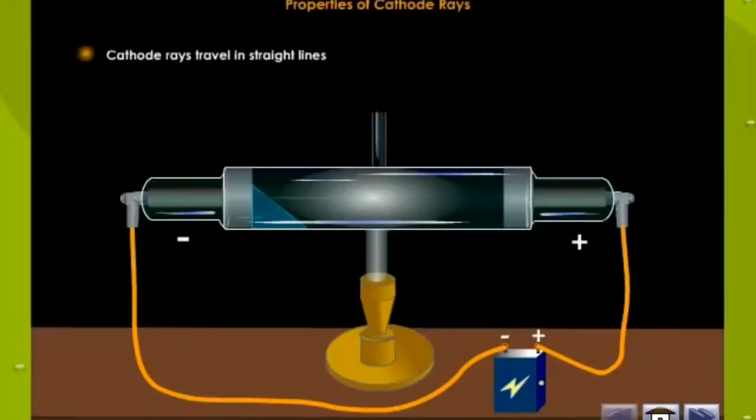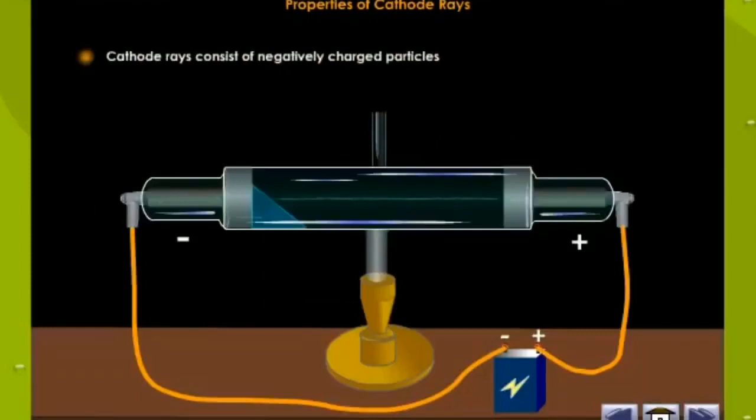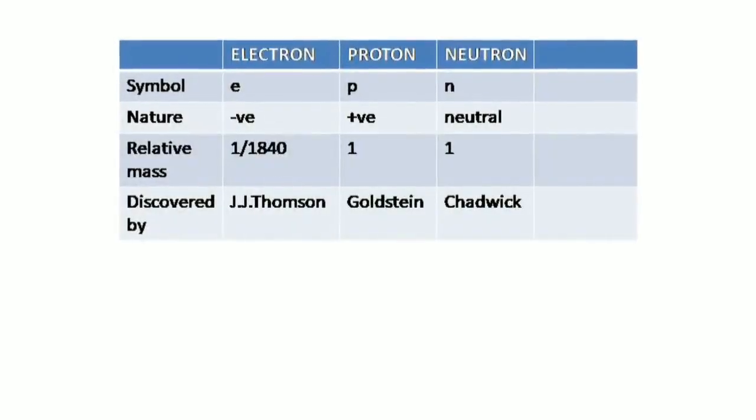J.J. Thompson performed experiments to study the properties of cathode rays. First property: cathode rays travel in straight lines, simply by putting an object in the path of cathode rays, a shadow was formed. The second property is that when an electric field is kept near the cathode rays, it was observed that the cathode rays were attracted by the positive plate and repelled by the negative plate, showing thereby the rays must consist of negatively charged particles which were named as electrons.